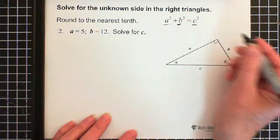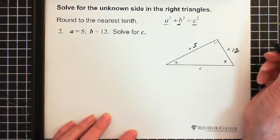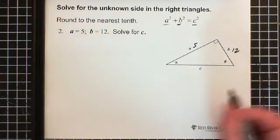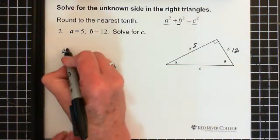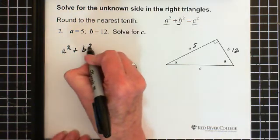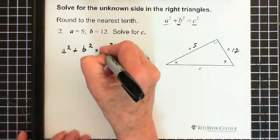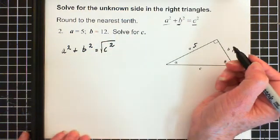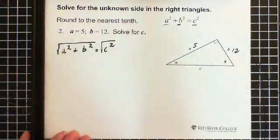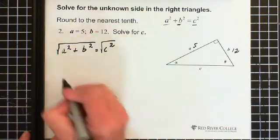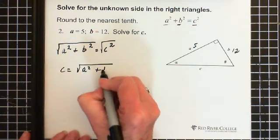So we're told that A is 5 and B is 12, which doesn't actually make that much sense when you look at the triangle, but that's okay. We'll ignore that. And what we're doing is solving C. So, we're going to use Pythagoras A squared plus B squared equals C squared. We're solving for C. So then what we do is we square root C squared in order to get C by itself, but if we square root C squared, we have to square root this. Square root of C squared is C. So C equals the square root of A squared plus B squared.